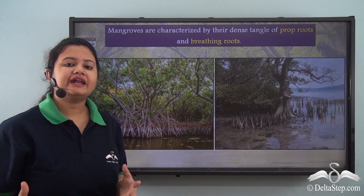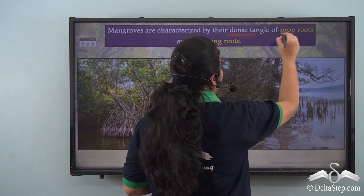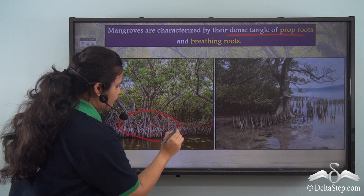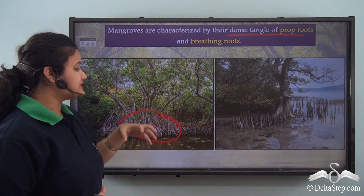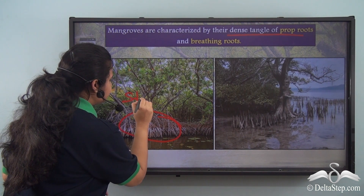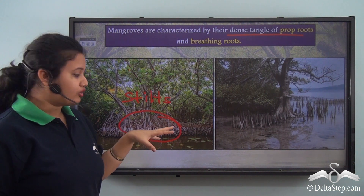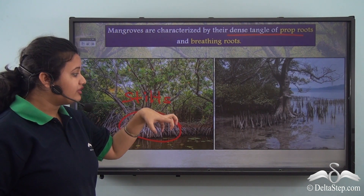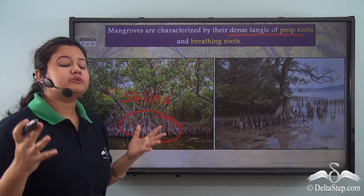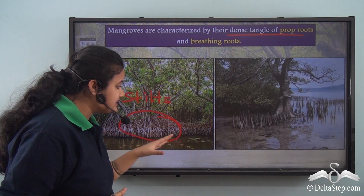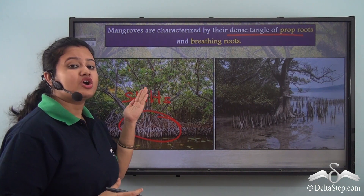Mangroves are characterized by special roots. They have a dense tangle of prop roots, and because of these prop roots, these trees appear to be standing on stilts. This dense tangle of roots holds on to the soil very firmly and enables the tree to face the daily change in water level due to tides, enabling mangroves to survive in such coastal regions.